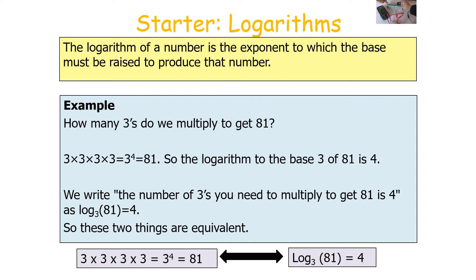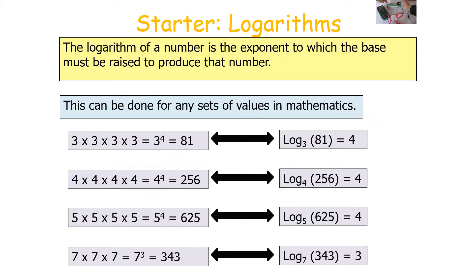These two things are equivalent: 3 to the power of 4 equalling 81 is the same as writing log base 3 of 81 equals 4. This can be done for any set of values. For example, 7 times 7 times 7, which is 7 to the power of 3, equals 343. So therefore log base 7 of 343 is equal to 3.